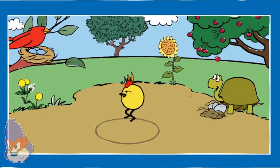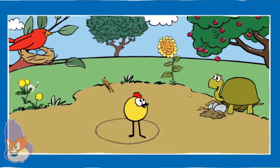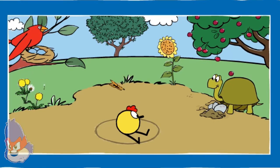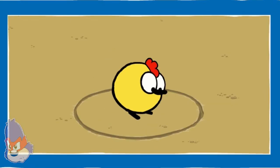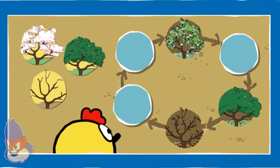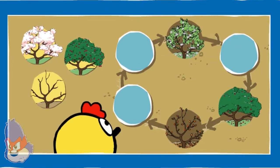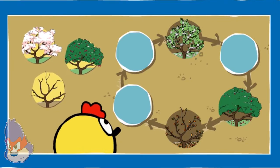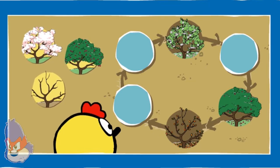Let's explore a different natural cycle with Peep. Cherry tree! What about cherry trees? How do they change with the seasons? Help Peep put things in the right order. Drag the pictures onto the spots in the circle where you think they go. Think about what happens first and what happens next.